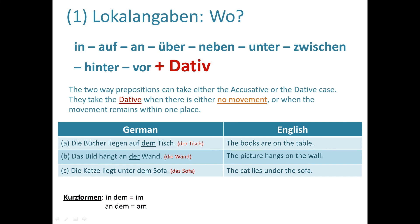For example: 'Die Bücher liegen auf dem Tisch.' 'Der Tisch' is masculine. When we ask 'Wo sind die Bücher?', 'der Tisch' changes to 'dem Tisch' in the dative case — articles change in dative, so 'der' becomes 'dem.' 'Die Bücher liegen auf dem Tisch' — the books are on the table.